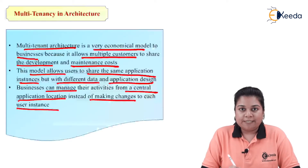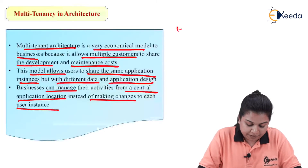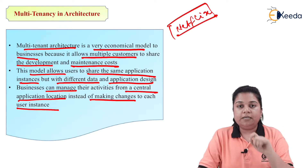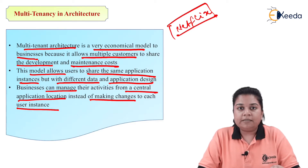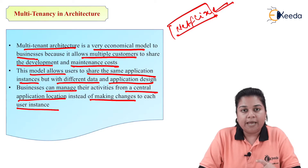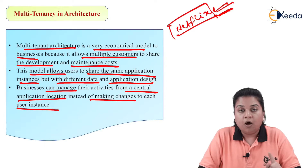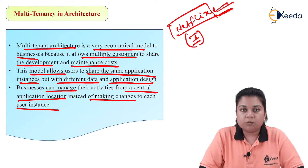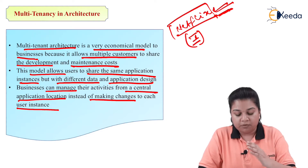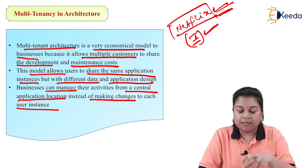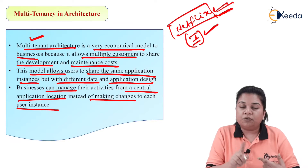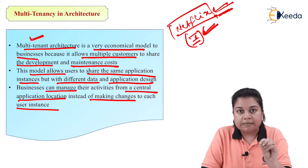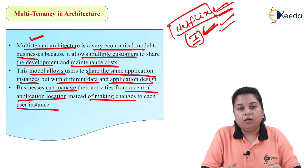What multi-tenancy architecture means is — take Netflix as an example — I am not the only one who has a subscription to that application. There are several others who have subscribed and they will be accessing that application at the same time as me. Also, it is not necessary that I am the only one watching a particular show; there can be hundreds of others watching that same show simultaneously. In multi-tenant architecture, Software as a Service must ensure that all of them can access it at the same time, anywhere, anytime, on any platform.